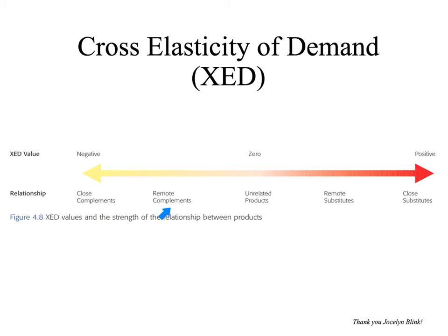There could also be remote complements — products not quite so tied together. I'm in Santiago, Chile, and for the United States crowd, peanut butter and jelly are a very American thing to eat — those would be close complements. But something like peanut butter and honey would be a remote complement, because honey has other purposes and not everyone likes them together, though some people do. So they would be remotely complementary to one another.